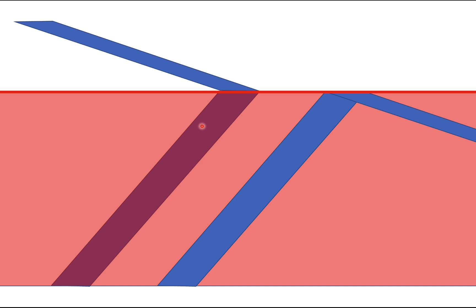And there are two end members of how you can do it. You can go vertically, so that would be a normal fault. Or you can go horizontally, so that would be a strike slip fault. And there could be anything in between.